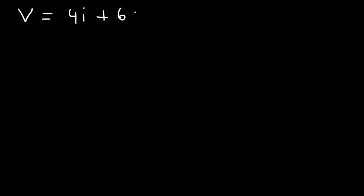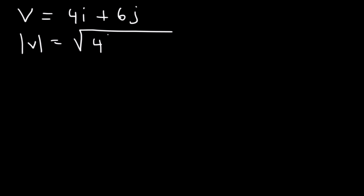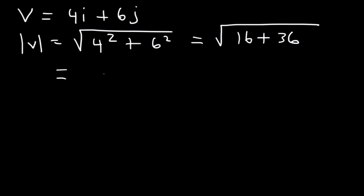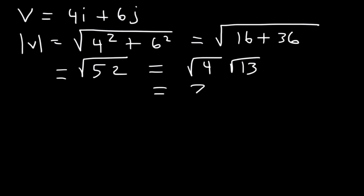Now let's say vector V is 4i plus 6j. Find the magnitude and the angle relative to the positive x-axis. The magnitude is the square root of 4 squared plus 6 squared: 16 plus 36 equals 52. Since 52 is not a perfect square, we simplify — 4 goes into 52 thirteen times, so we write it as the square root of 4 times 13. The square root of 4 is 2, so the magnitude is 2 root 13.